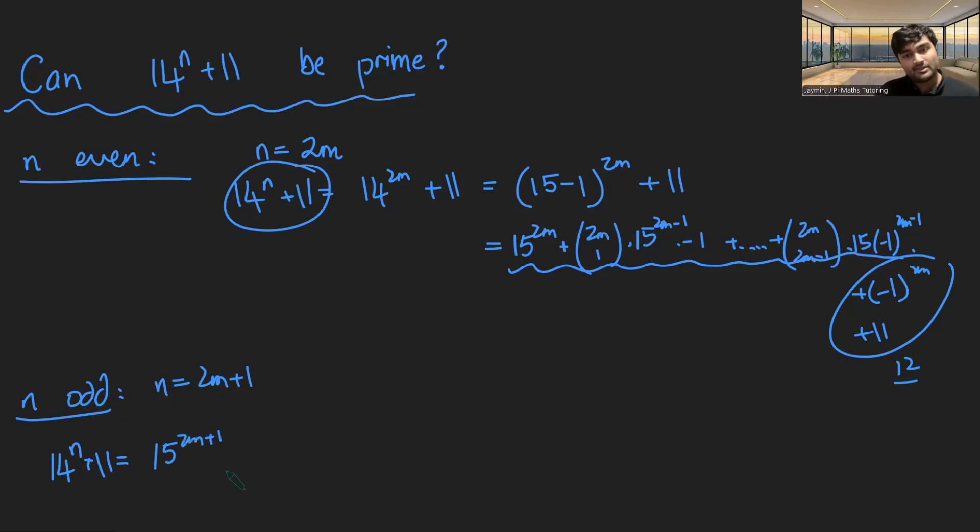...it's going to be 15 to the 2m plus 1 plus 2m plus 1 choose 1 times 15 to the 2m times minus 1 plus blah, blah, blah, all the way up to 2m plus 1 choose 2m times 15 times minus 1 to the 2m plus minus 1 to the 2m plus 1 plus 11. Again...